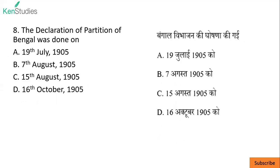Next. The declaration of partition of Bengal was done on — yeh Curzon ke samay hua. The declaration was made on 19 July 1905. The actual partition happened on 16 October 1905. But the question asks about the declaration, so the answer is 19 July 1905.